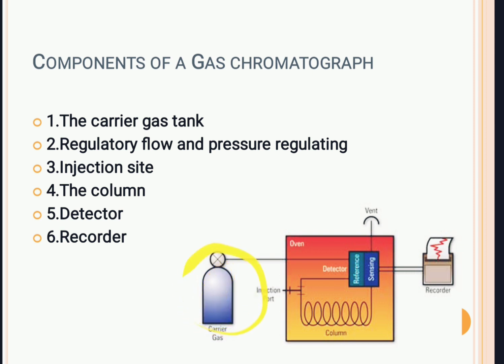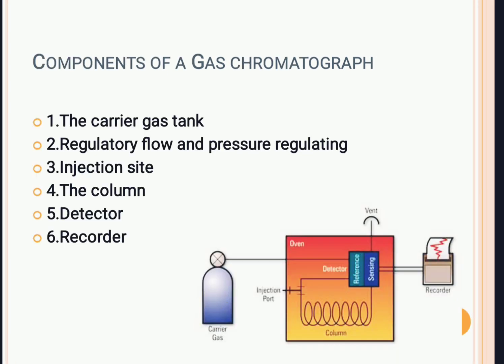The carrier gas tank contains the mobile phase — that is the carrier gas — which can be helium, nitrogen, argon, etc. This gas flows through the regulator system at a certain pressure, and from there the sample is injected into the system. When the sample is injected, it enters with the carrier gas into the column. It passes through this circular or coiled column and comes to the detector. Various kinds of detectors are used, such as ECD, TCD, FID, and photo ionization detector. Then from the detector, the separated components reach the recorder and we get the spectrum on the GC software.